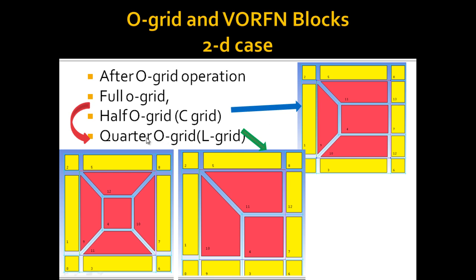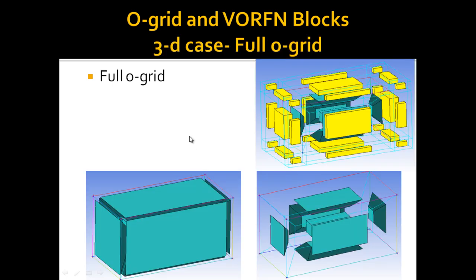The third option is the quarter O-Grid also known as L-Grid, where two edges are selected. In the case of 3D, the full O-Grid will have a specific shape — the first figure shows the blocking of the O-Grid. In this case we get a total of seven blocks in 3D: one in the center, two on one side, two on the right and left sides, one on the top, and one on the bottom.